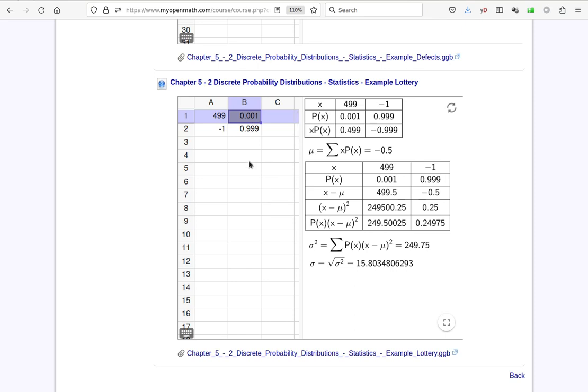One time in 1,000, that is a probability of 0.001, the person wins $500.